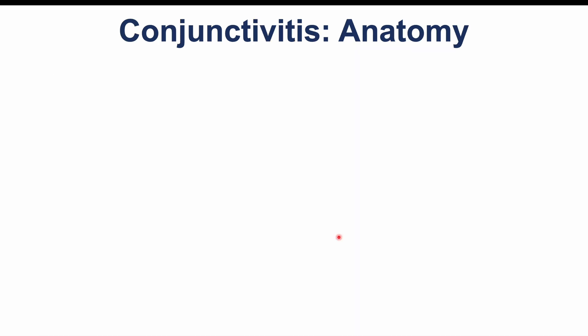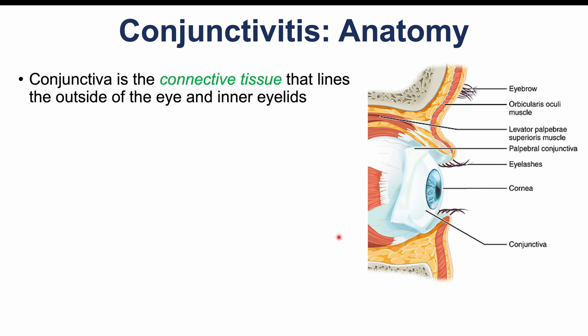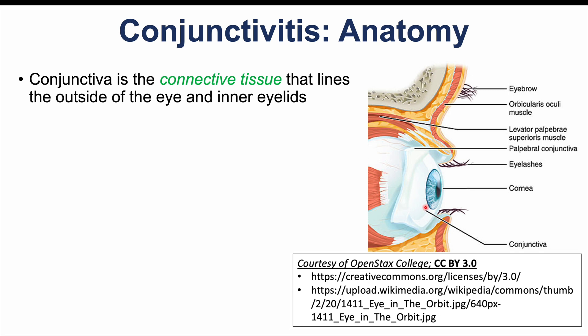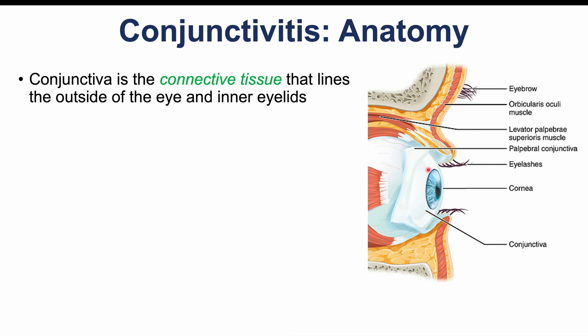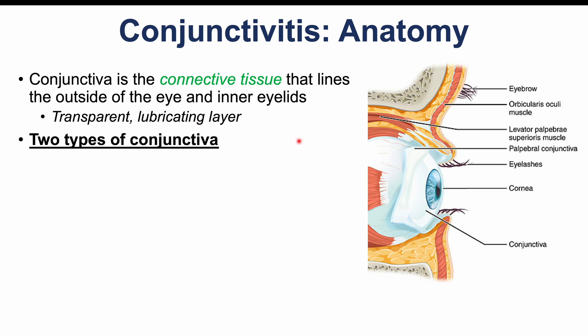Before getting into causes and signs and symptoms, let's discuss the anatomy of the conjunctiva. The conjunctiva is connective tissue that lines the outside of the eye and the inner eyelids — it overlays the outside of the eyeball and folds in to cover the inside of the eyelids. It is a transparent and lubricating layer. There are two layers: the bulbar conjunctiva, which layers the outside of the eyeball itself.